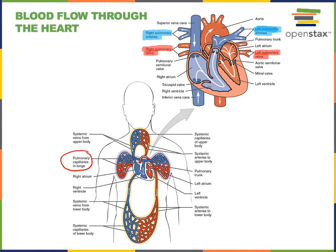In the systemic circuit, the arteries have a relatively high oxygen concentration. The largest systemic artery is known as the aorta, and the aorta branches into numerous smaller arteries. Blood then flows from these arteries into systemic capillaries. Here we can see the systemic capillaries of the lower body, and up here we see systemic capillaries of the upper body.